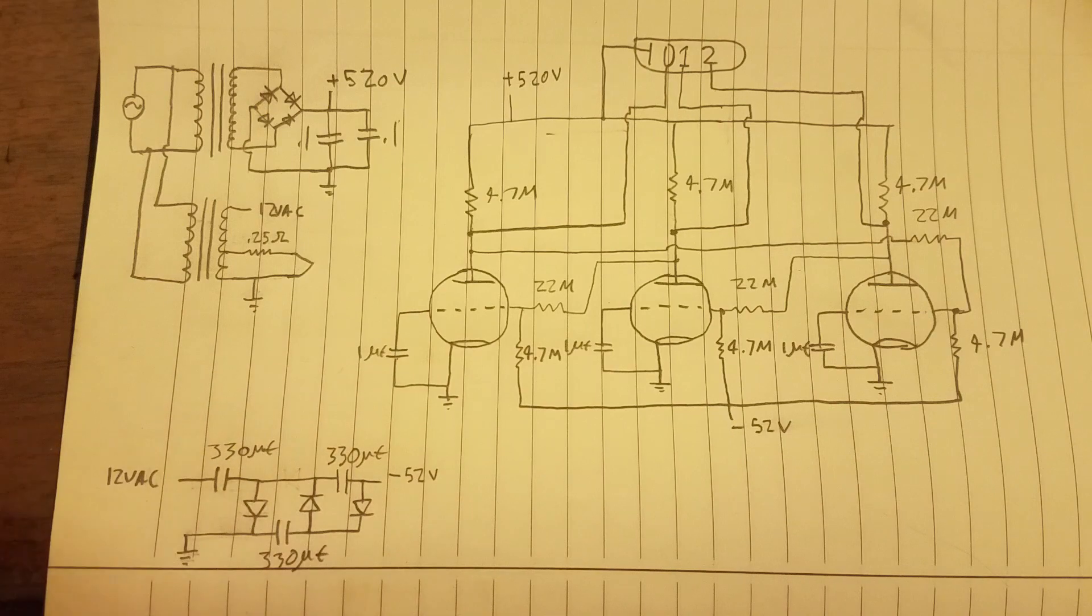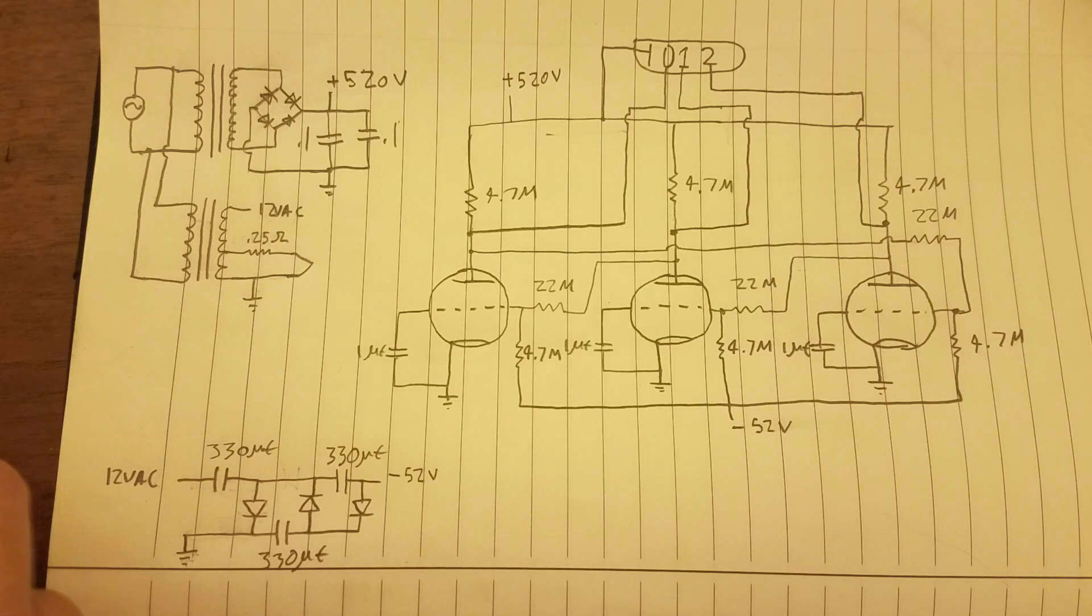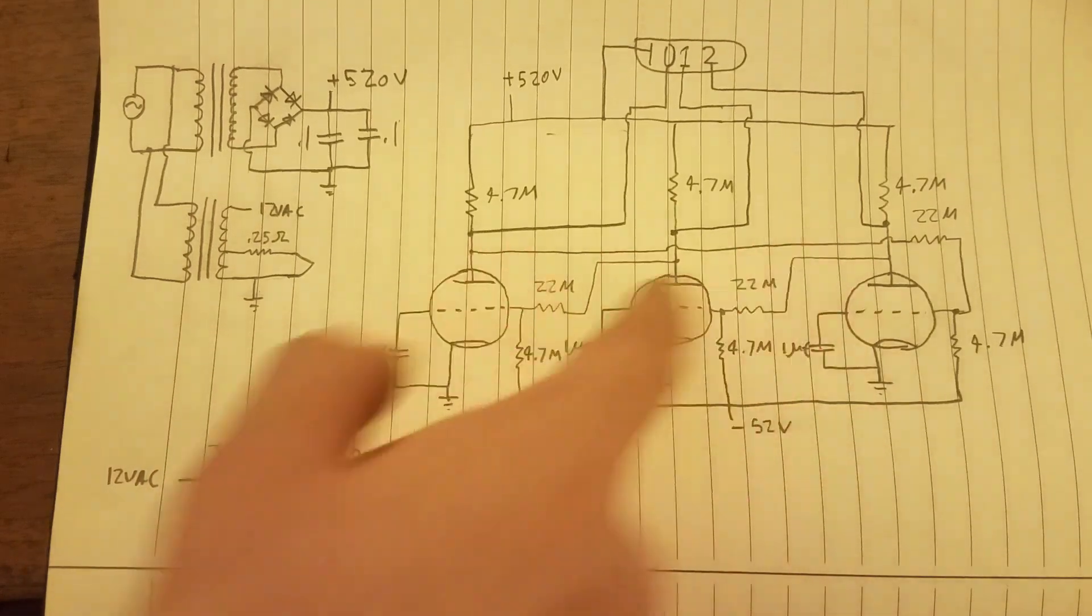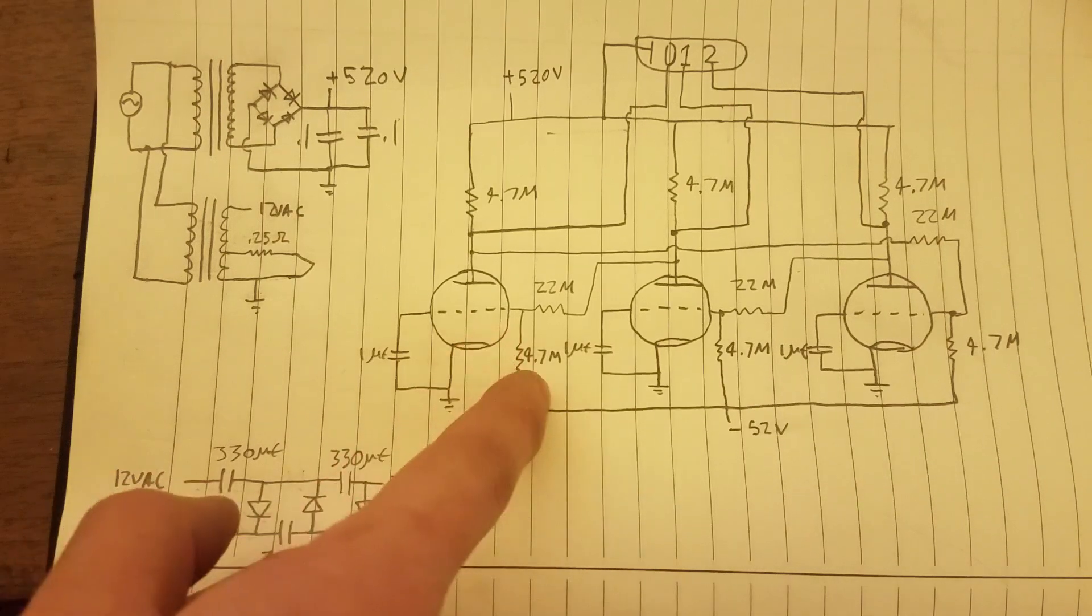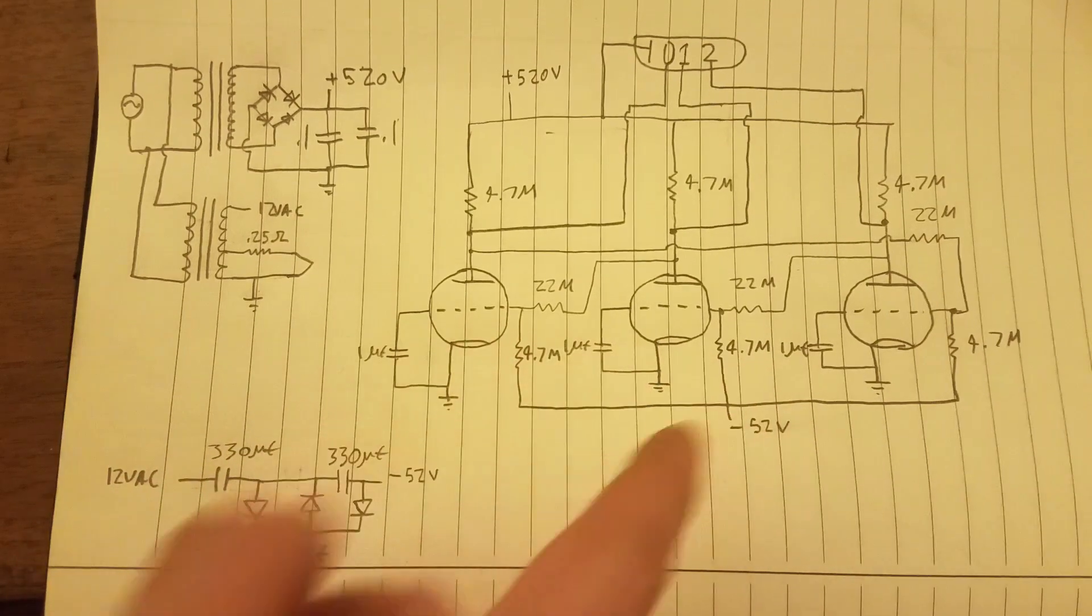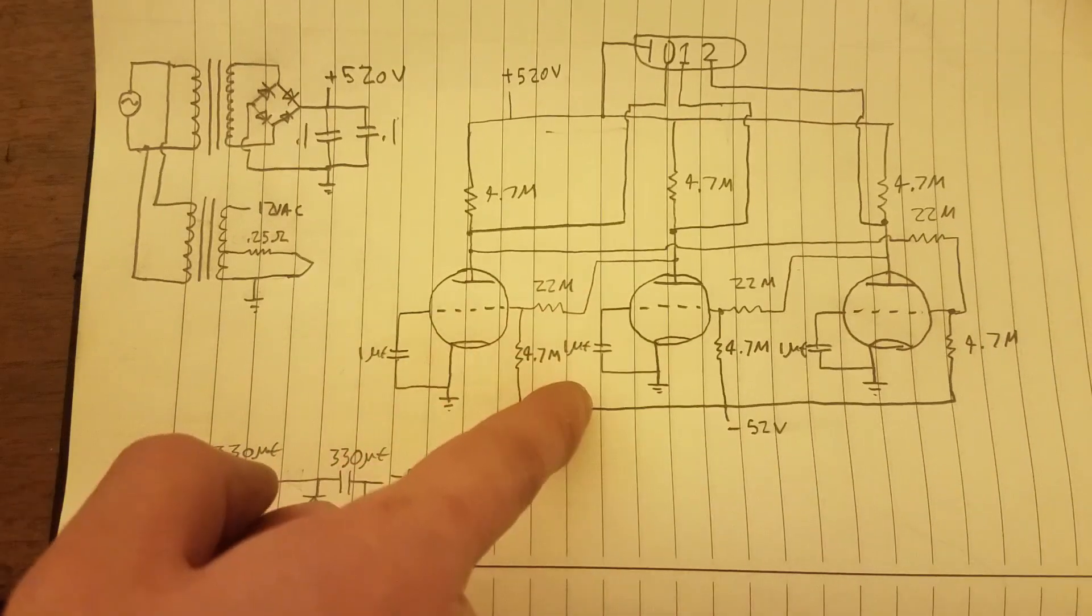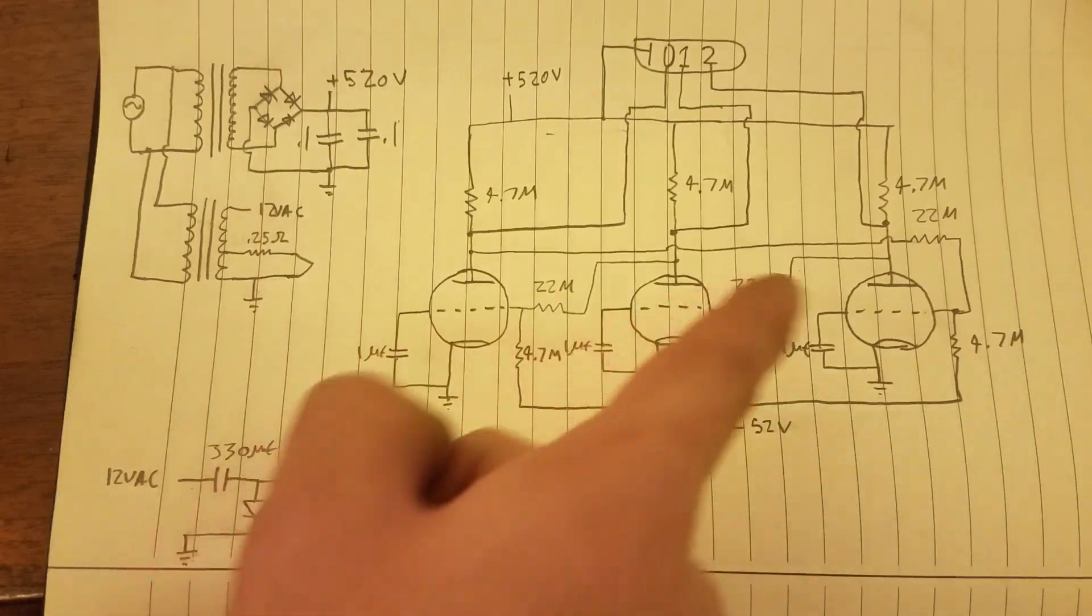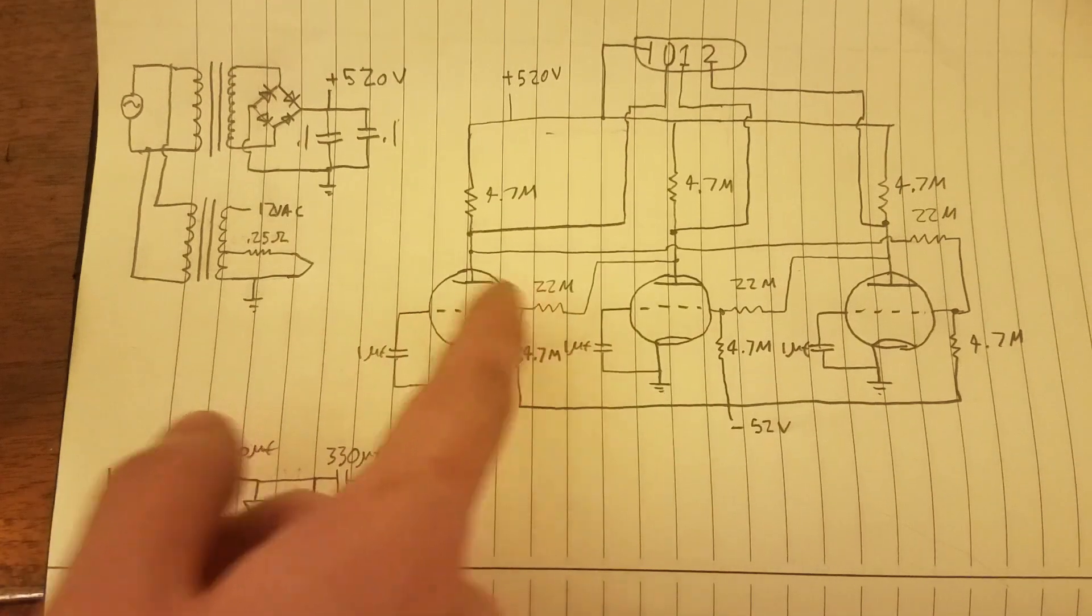Because of the high voltages involved, I want to use some high impedance resistors right here to minimize any current draw. So right here are 22 megaohms going from the grid to the plate. And right here are 4.7 megaohm resistors that are going from the grids to the bias supply. So that sort of forms a voltage divider between the bias supply and the plates.